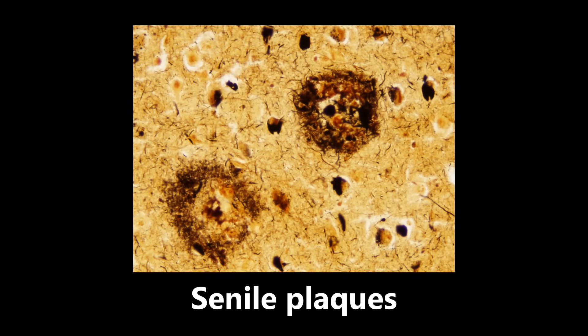This here is an image of senile plaques. They are extracellular amyloid deposition in the gray matter of the brain that is seen in Alzheimer's. So these plaques — all this amyloid deposition, really ugly looking — it's seen in the gray matter and it's seen in Alzheimer's disease.